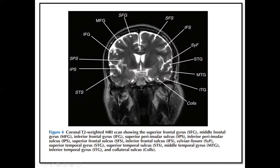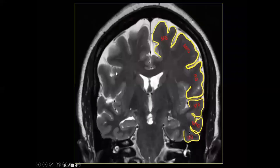To summarize the lateral surface: superior frontal gyrus, middle frontal gyrus, inferior frontal gyrus. Parts of the lateral sulcus, then the superior temporal sulcus. And the temporal gyri: superior temporal gyrus, middle temporal gyrus, and inferior temporal gyrus.